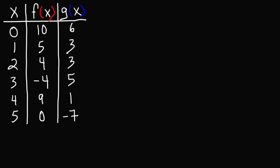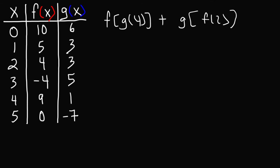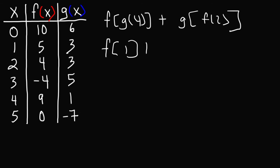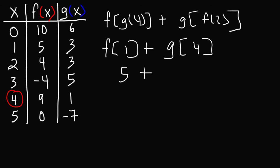Let's work on some more problems: f of g of 4 plus g of f of 2. First, evaluate g of 4 — when x is 4, g is equal to 1. Then evaluate f of 2 — when x is 2, f is 4. Now evaluate f of 1: when x is 1, f has a value of 5. And g of 4 is 1. So we get 5 plus 1, which is 6.